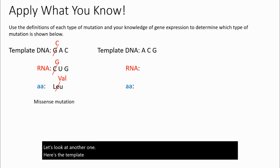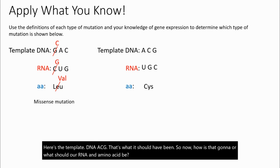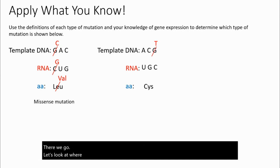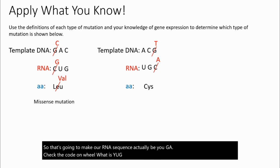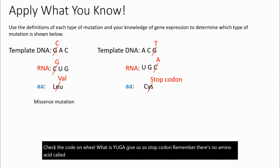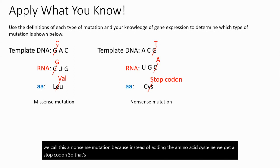Next example: the template DNA should be ACG, producing a corresponding RNA and amino acid. If the mutation changes the third nucleotide, the RNA sequence becomes UGA. Checking the codon wheel — UGA is a stop codon. There's no amino acid called stop, so translation ends too soon. Instead of adding cysteine, we get a stop codon. This is a nonsense mutation and is normally not tolerated.